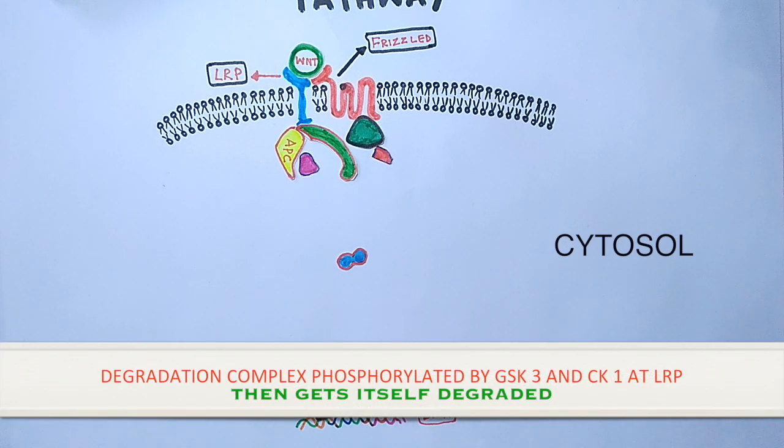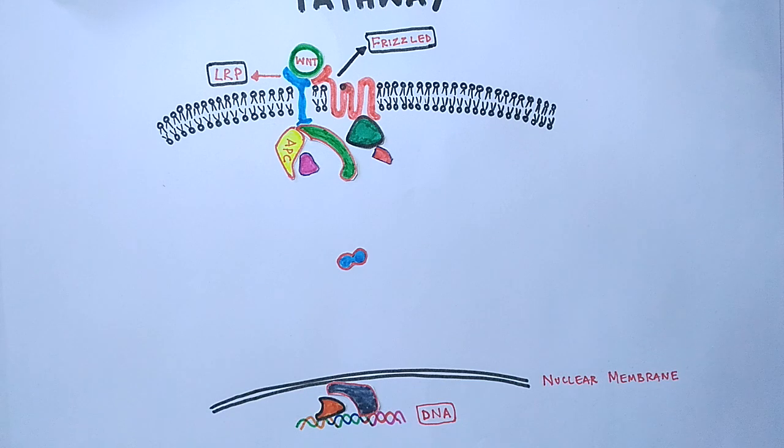Now in the cytosol, the beta-catenin remains off from the degradation complex. In this way, the beta-catenin phosphorylation is blocked, with which it is not ubiquitinated, and ultimately the beta-catenin is not degraded by proteosome.